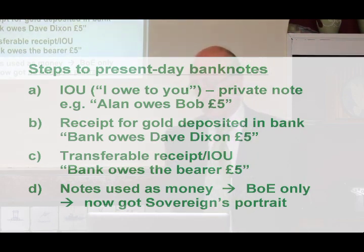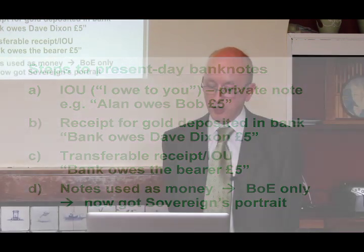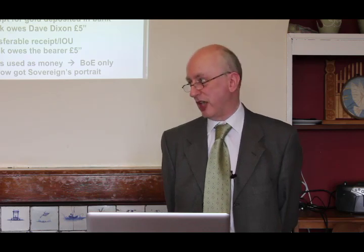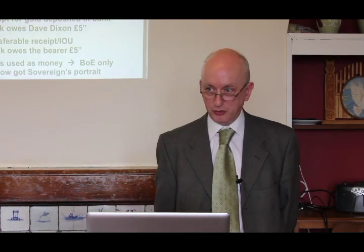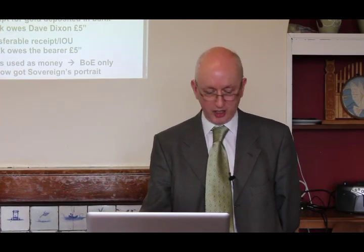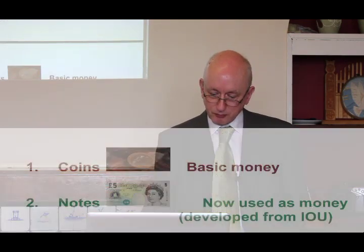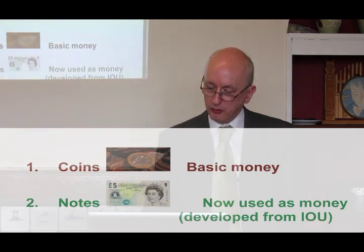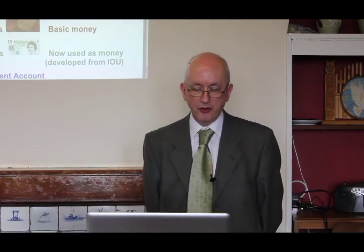This further developed so that the Bank of England got a monopoly on producing banknotes in England and Wales, because if other banks had been doing it they'd have effectively been printing their own money. In the 20th century it went even further and the sovereign's portrait started getting printed on the banknotes — another acknowledgement that the notes are now official UK money, no longer just IOUs from a bank.